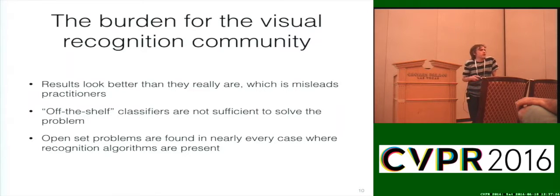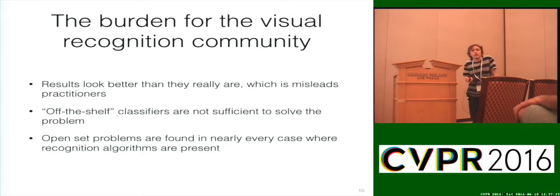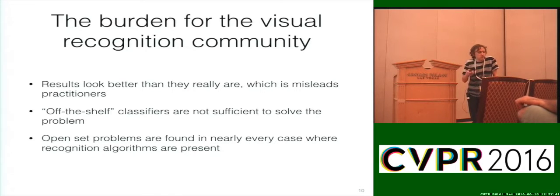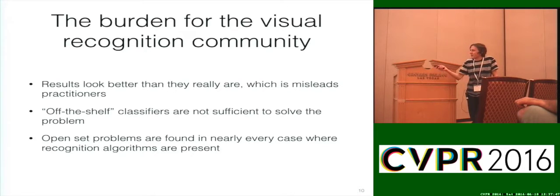Open set recognition problems are found in nearly every case where recognition algorithms are present — not just computer vision, but also natural language processing and other problems within signal processing. Any general recognition problem will have this open set problem. To me, there are very few closed set problems that are realistic that we should be solving — the things we really want to solve end up being open set recognition problems.